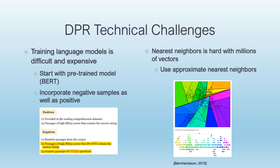The Karpukhin team had to respond to a couple of key technical challenges in order to make the process work. They had to come up with smart ways to train the question and passage embedding models, which otherwise would be extremely difficult and expensive. They started with a pre-trained model, BERT, to give them a head start, and they also incorporated negative samples as well as positive samples in order to maximize the similarity between desirable passages and the question, and to minimize the similarity of other passages — even passages that might otherwise seem similar due to keyword overlap but don't match in semantic meaning.